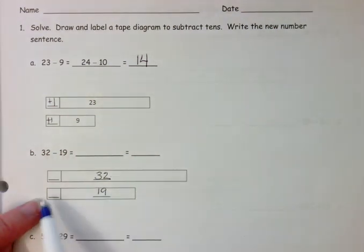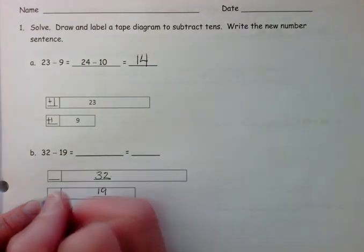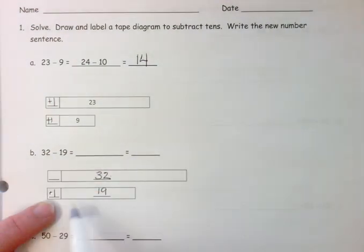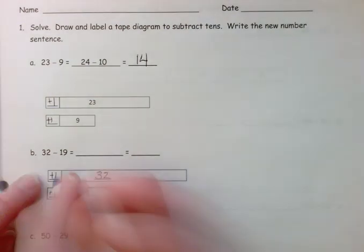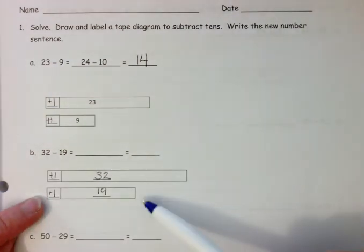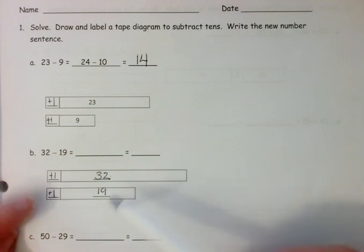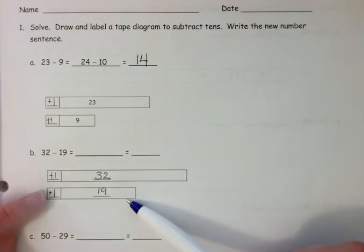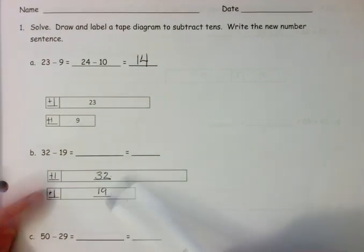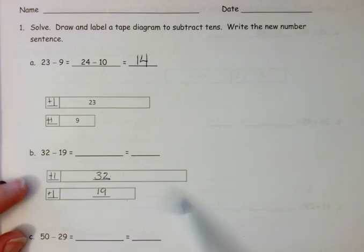And then I want to make it easier to subtract. So I'm going to add 1 to this. And if I add 1 to my subtrahend, I have to add 1 to my minuend. Both numbers have to have the same amount added to them so that our difference remains constant.